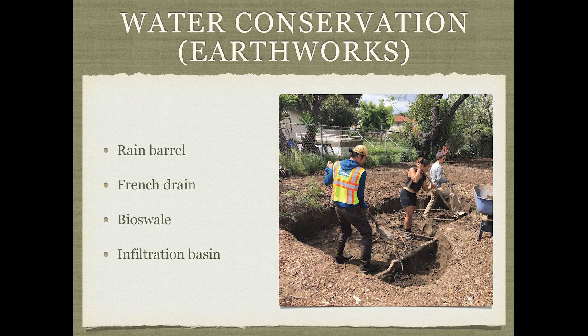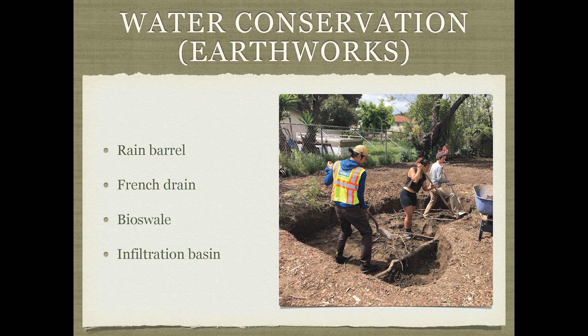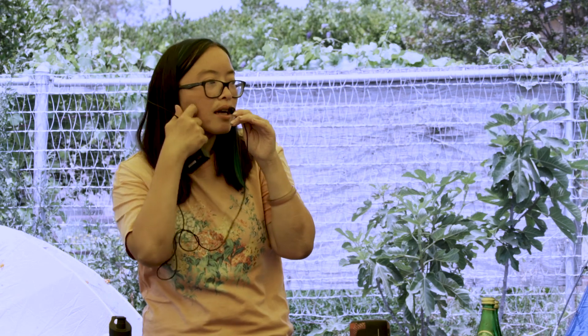For water conservation and earthworks, swales and infiltration basins are useful. At home scale, a rain barrel is great for capturing water from gutters for irrigation. I prefer capturing water in the soil to support biology and groundwater recharge. A French drain is a trench channel filled with gravel used to divert water away from areas where you don't want it to collect — often used near housing foundations — and can channel water into a swale or infiltration basin.